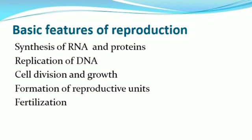Whether reproduction is asexual or sexual, there are certain basic features present in all types of reproduction. First, the cell synthesizes RNA and proteins, followed by replication of DNA — that is, multiplication of DNA. After that, the cell divides and continues to grow. Once the cell attains maturity, it forms reproductive units called gametes. The gametes fuse to form zygotes — this process is called fertilization.